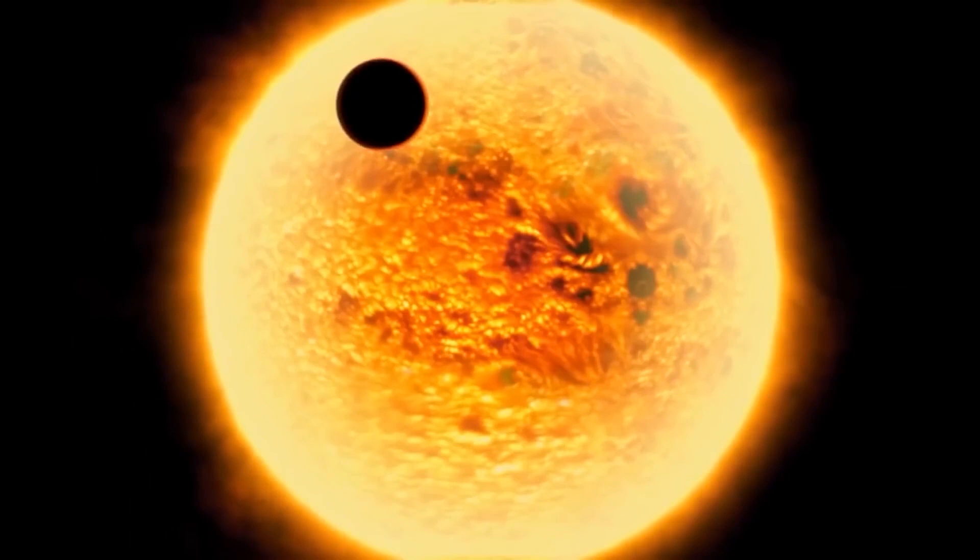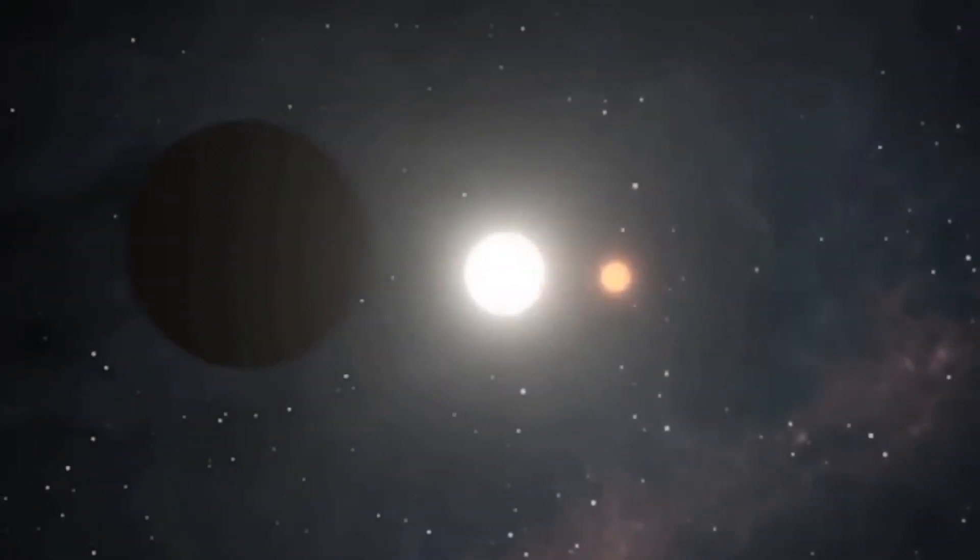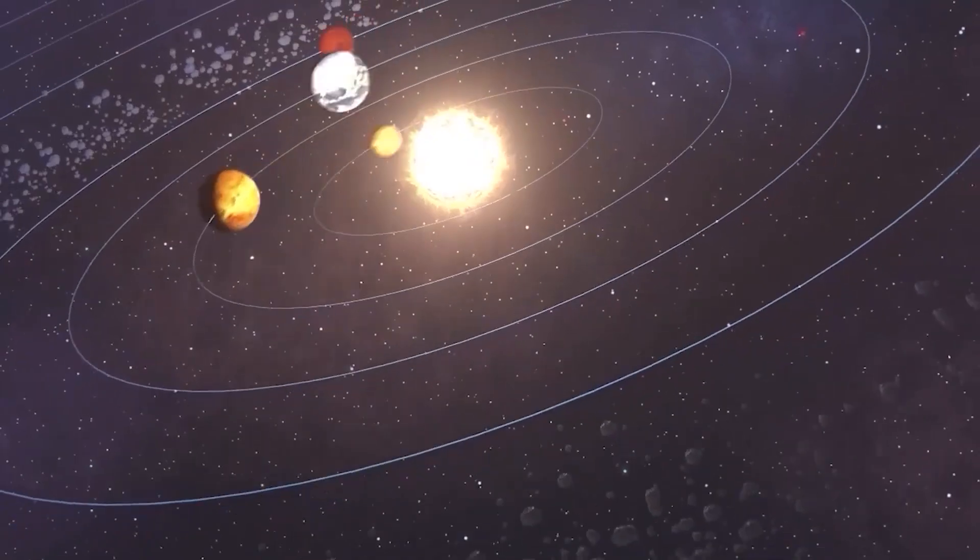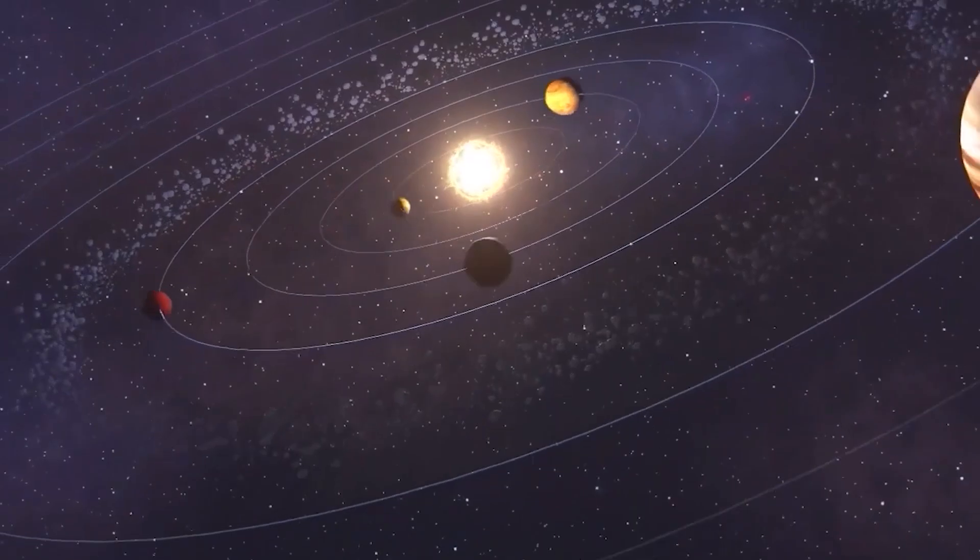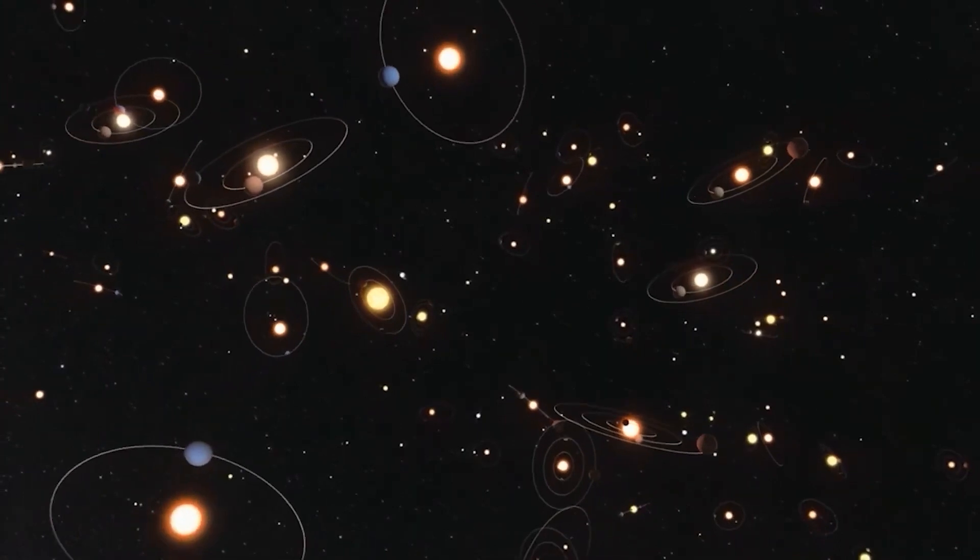The presence of a Jupiter-sized planet orbiting a small red dwarf star has defied conventional theories of planet formation and raised new questions about the diversity of planetary systems. As we continue to search for exoplanets beyond our solar system, we can only imagine what other surprises might be waiting for us in the depths of space.